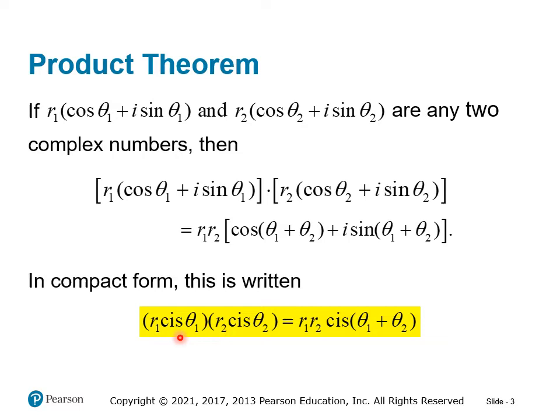So here again we have r1 cis θ1, r2 cis θ2, and the formula is equal to the product of their magnitudes, r1 times r2, cis of the sum of their angles. This is a really simple way to do products.